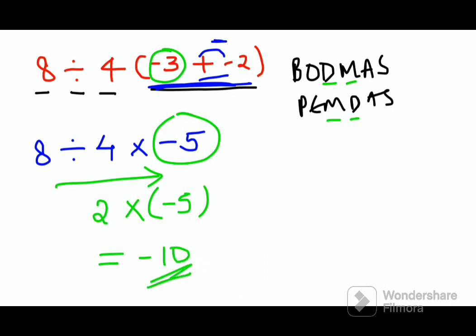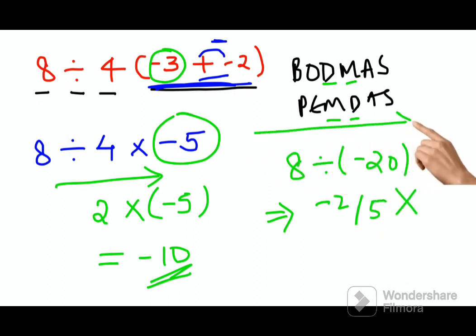A lot of my students actually goofed up and they did 8 divided by 4 into minus 5. That gets you minus 20. So the final answer which they got was minus 2 upon 5. That is absolutely wrong. Please understand, you have to always obey the direction of left to right when you are solving BODMAS or PEMDAS kind of questions.